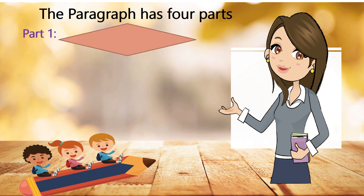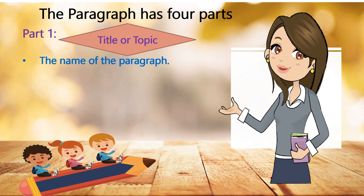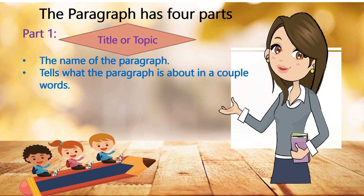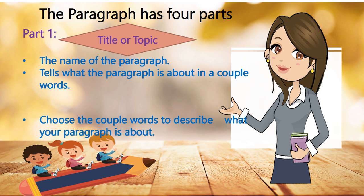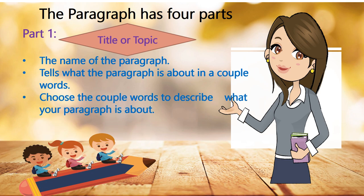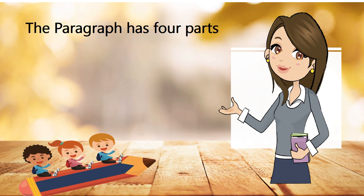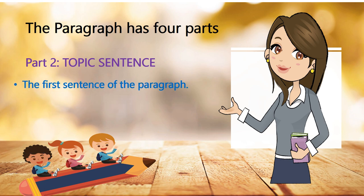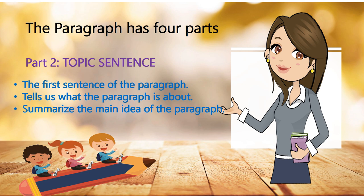The first part of the paragraph is the title or the topic. The title is the name of the paragraph. It tells what the paragraph is about in a couple of words. Choose a couple of words to describe what your paragraph is about. Titles always have a capital letter. The second part is the topic sentence — it is the first sentence of the paragraph. It tells us what the paragraph is about and summarizes the main idea.